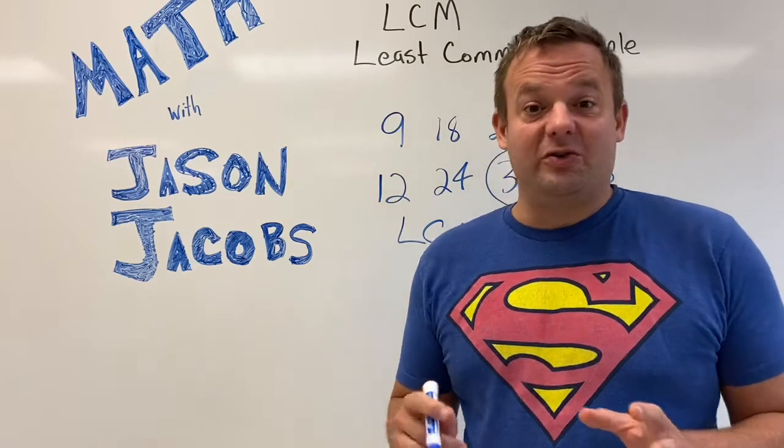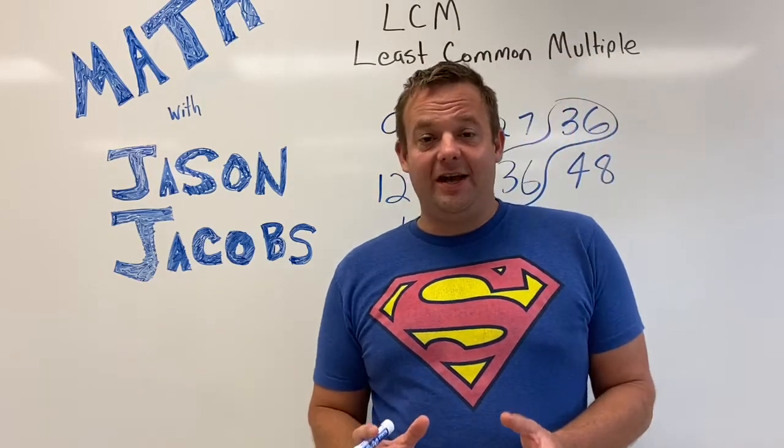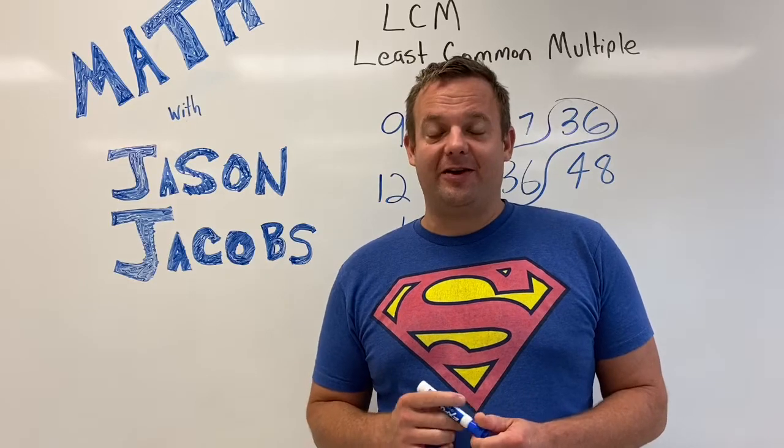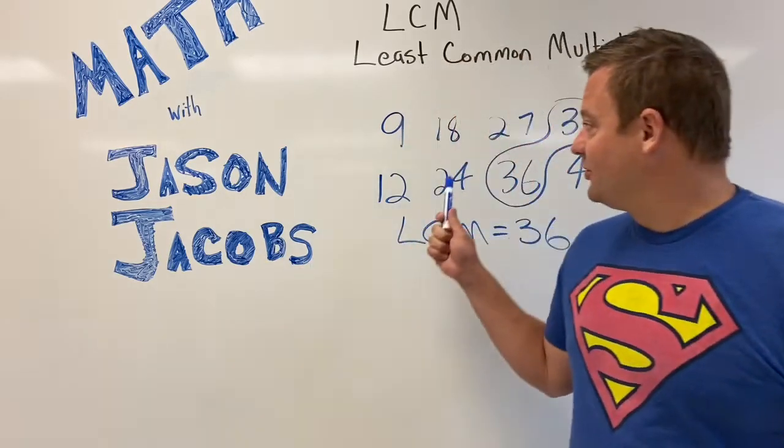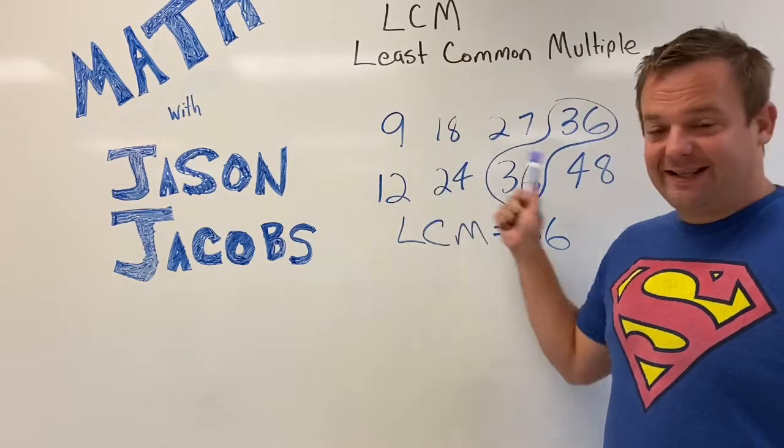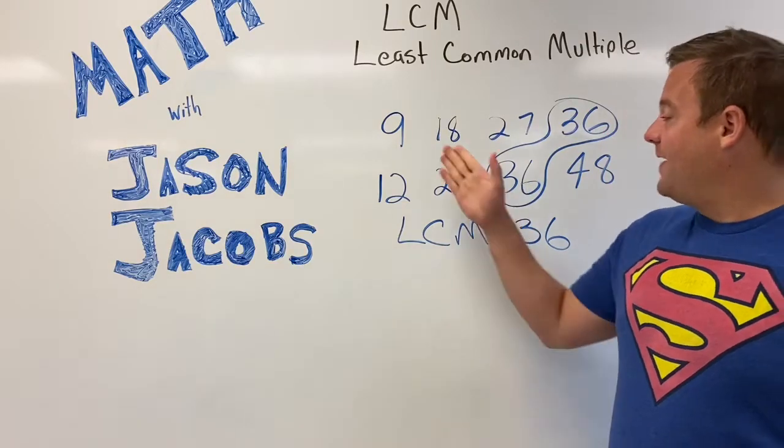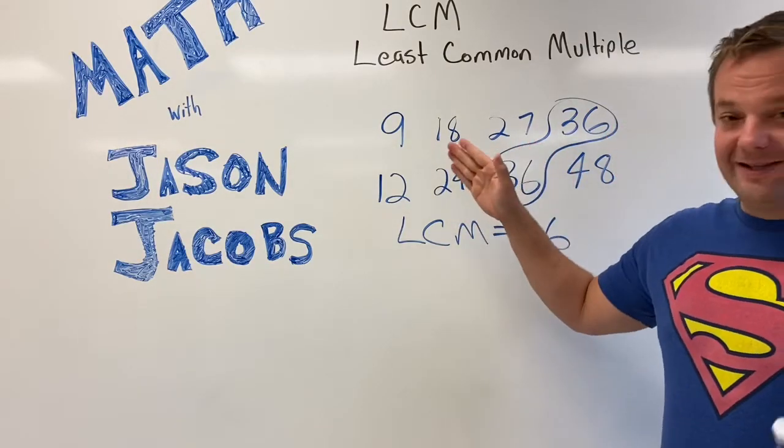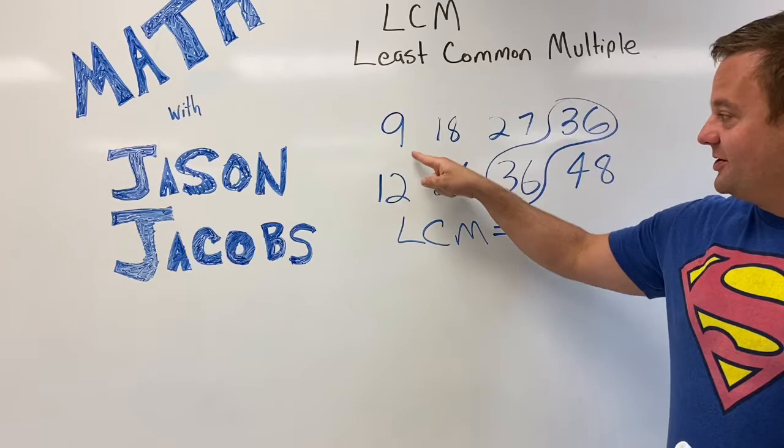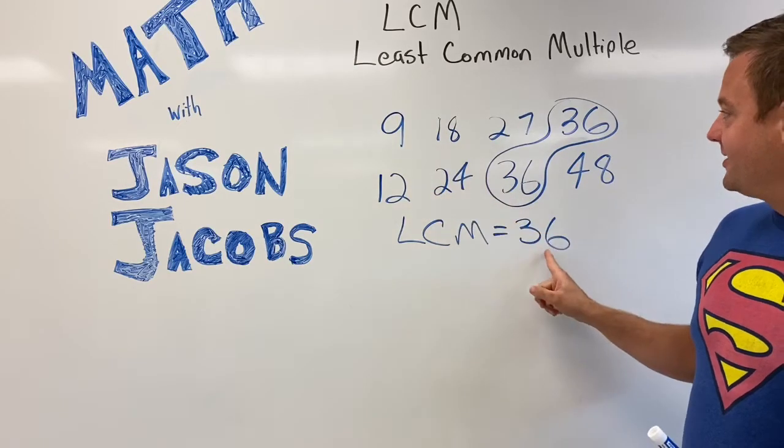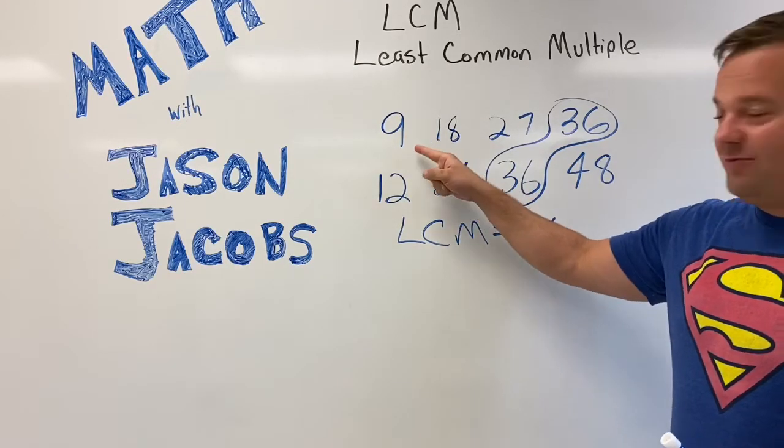We're going to find the least common multiple using prime factorization. I just showed the list method to find the least common multiple of two numbers, 9 and 12. The least common multiple is 36. The list method with smaller numbers such as 9 and 12 is pretty simple.